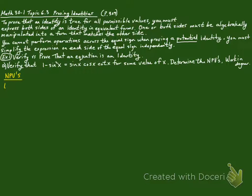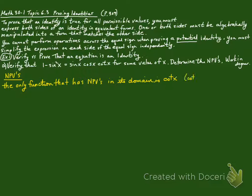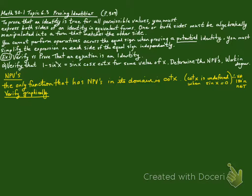The non-permissible values: the only function that has non-permissible values in its domain is cotangent of x, because cotangent of x is undefined when sine of x is equal to 0. That means x cannot equal 180 degrees times n, where n is any integer.